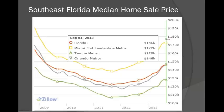In Southeast Florida, the median home price in 2013 is $172,000. You can see that this differs between other parts of Florida. For instance, Tampa is $128,000. The metro Orlando area is a little bit more than that, $146,000. This illustration of the various median home sale prices gives us an indication of how living in different parts of Florida can actually be more or less expensive.